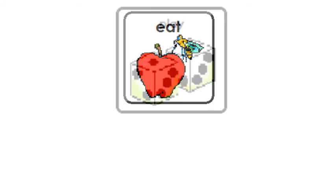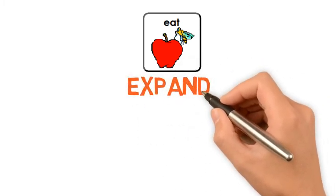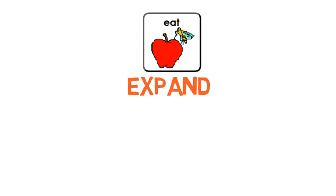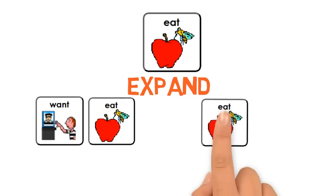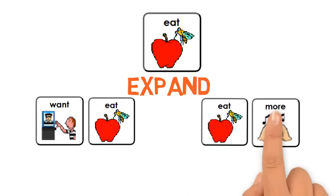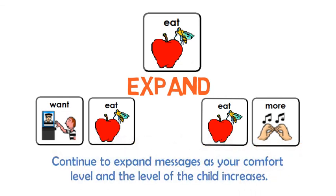If the child points to the play icon, you might respond by saying 'you're right, your brother is playing a video game over there.' When the child uses a communication system to express something using a single word, expand the message to a two-word combination. For example, if the child points to the eat icon, the partner might then respond by pointing to 'want + eat' or 'eat + more.' Continue to expand messages as your comfort level and the level of the child increases.